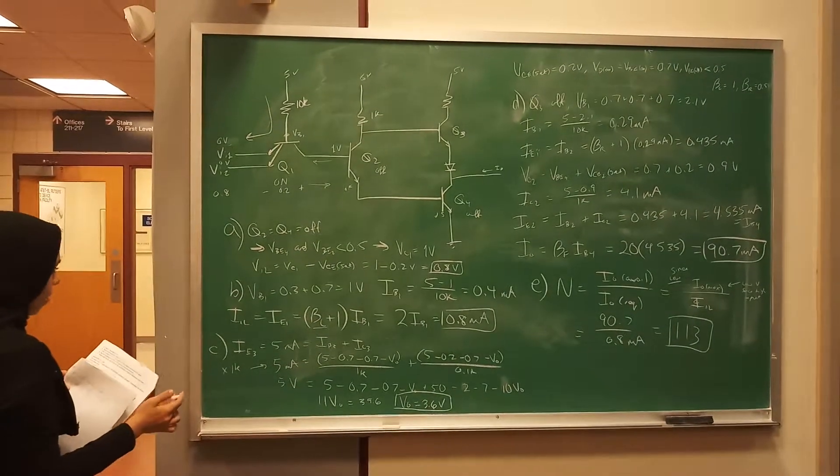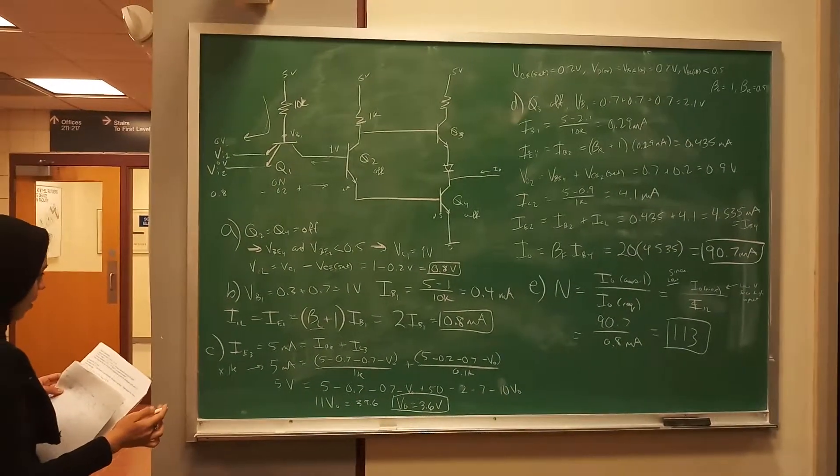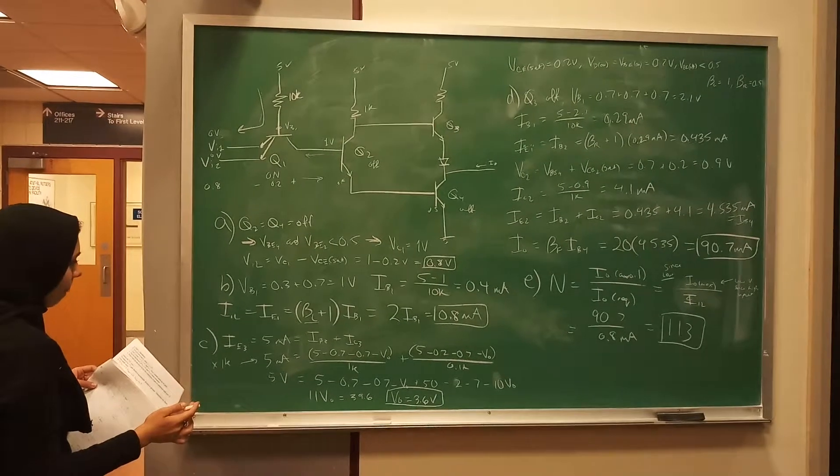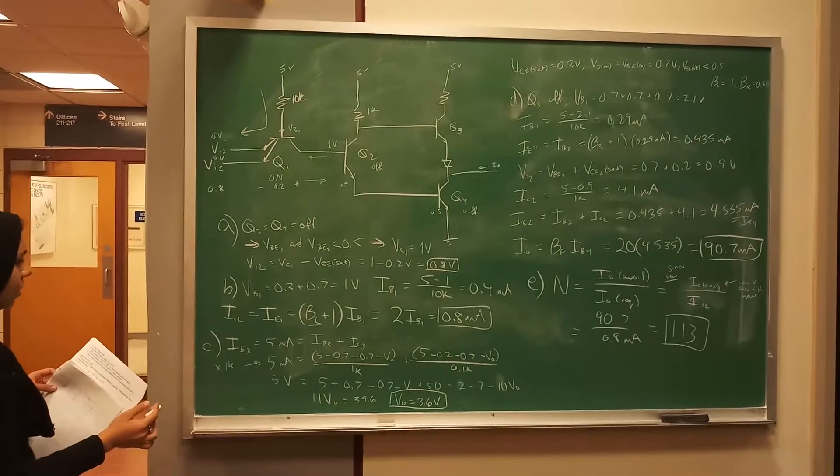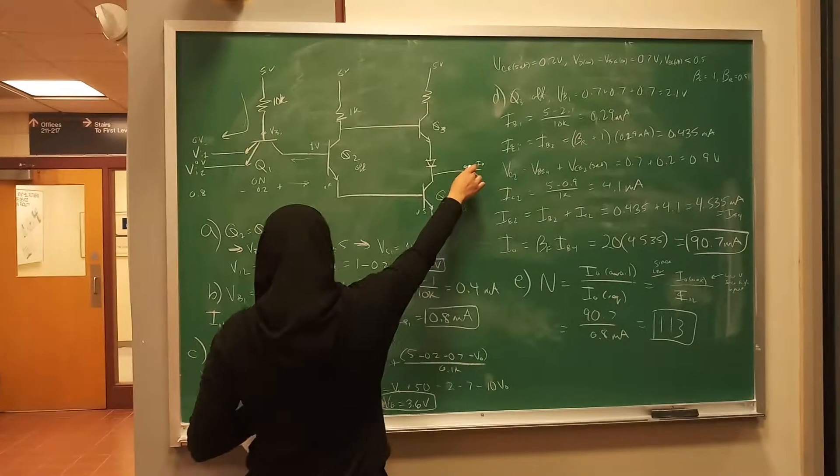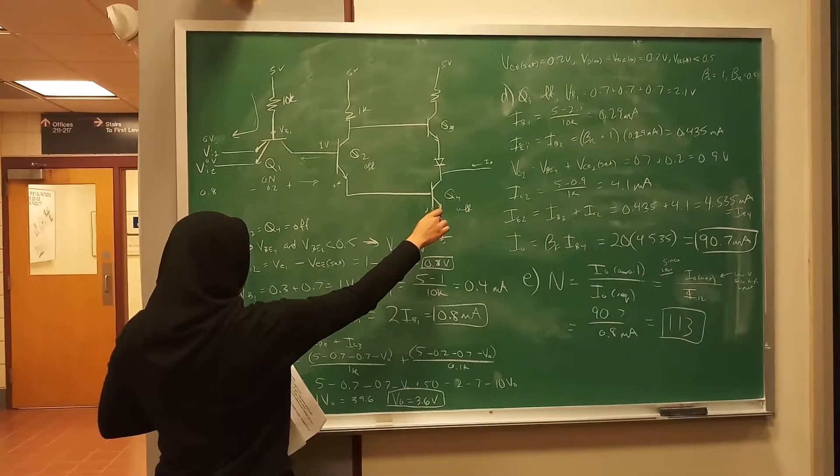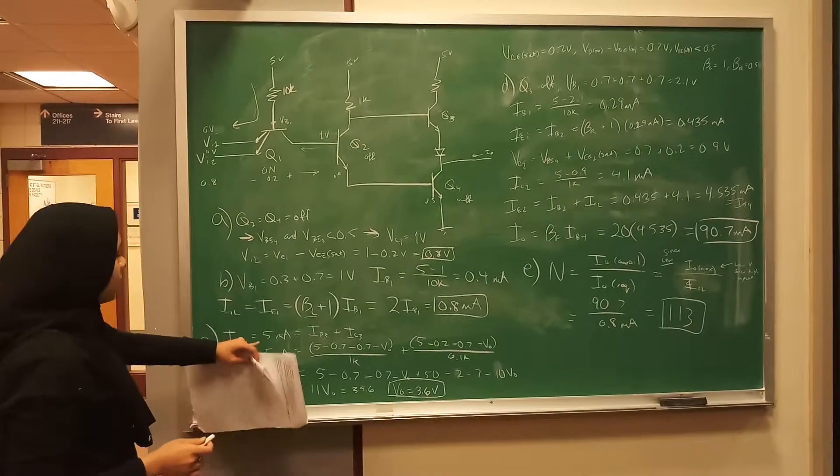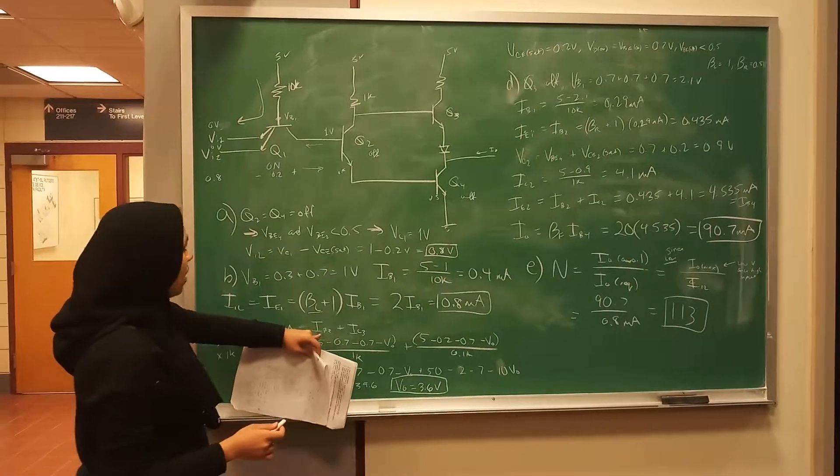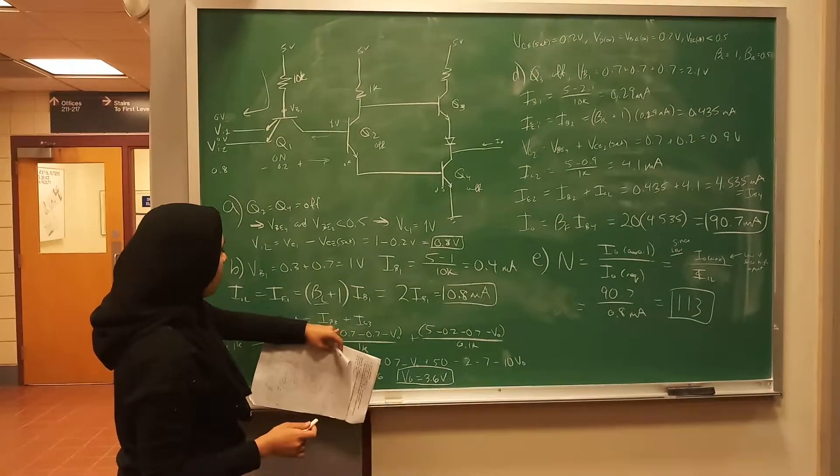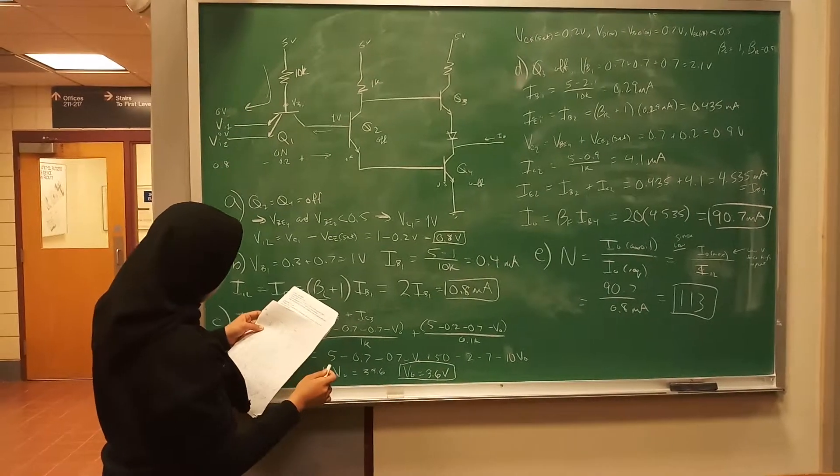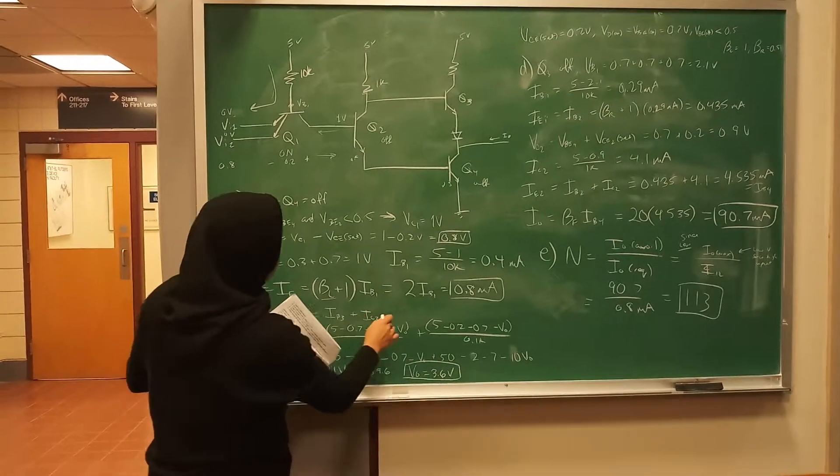So how to solve this is you set up your equation. So I_out right here is the equivalent of, right now, this 5 milliamps is the same as I_B plus... what is this? I_B3 plus I_C3.